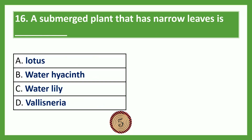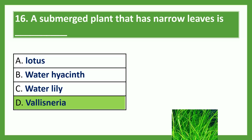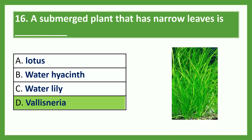A submerged plant that has narrow leaves is — Option A: lotus; Option B: water hyacinth; Option C: water lily; Option D: Vallisneria. The answer is Option D, Vallisneria. The submerged plant that has narrow leaves is Vallisneria.